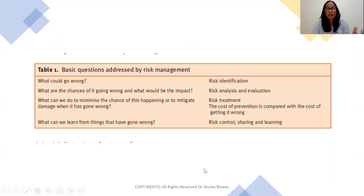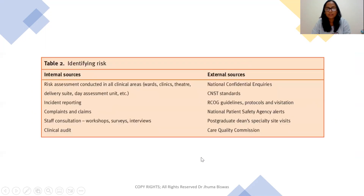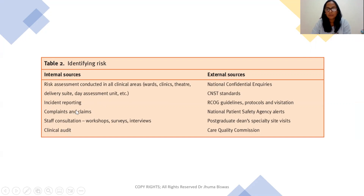How can we identify the risk? What are the sources for identification of risk? There are internal sources and external sources. In internal sources, you can identify risk from clinical areas such as wards, clinics, theater, delivery suite, or day assessment unit. You can also identify issues from incident reporting, complaints and claims, staff consultations like workshops, survey interviews, and from clinical audits. From external sources, you can identify from national confidential inquiries, CNST standards, RCOG guidelines or protocols or visitation, national patient safety agency alerts, postgraduate dean specialty site visits, and CQC — the Care Quality Commission.